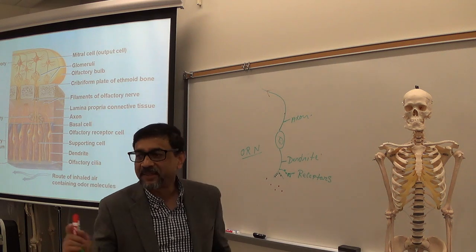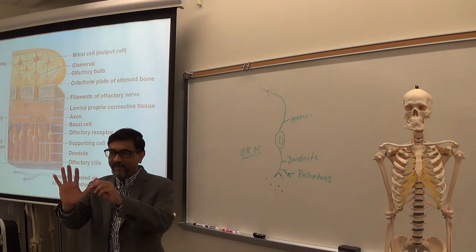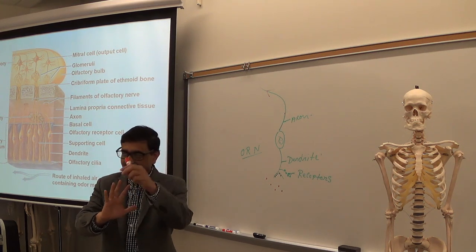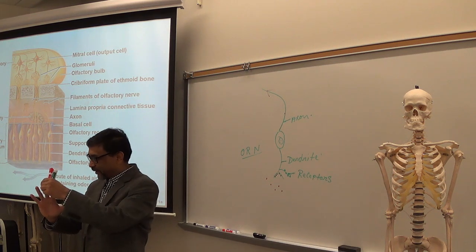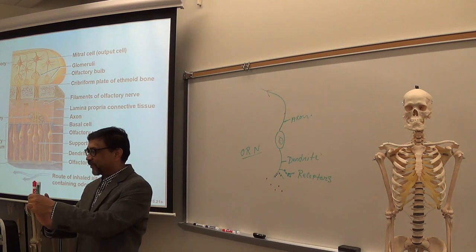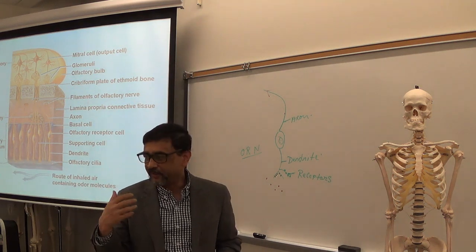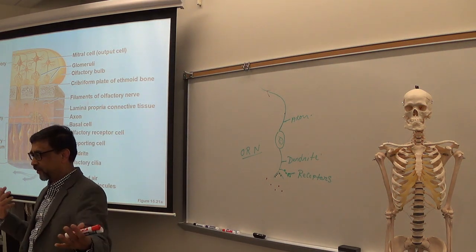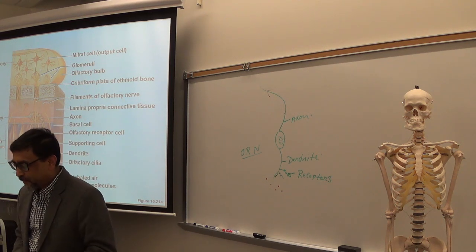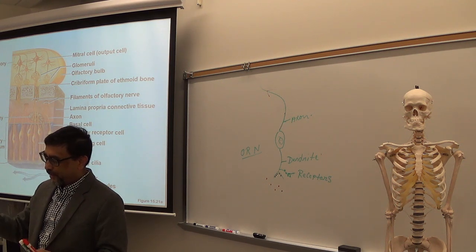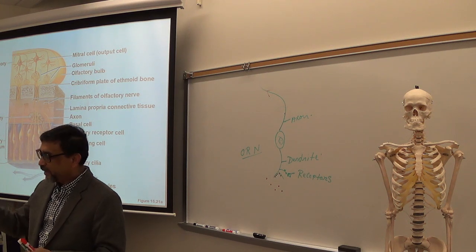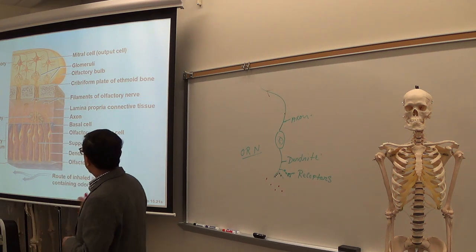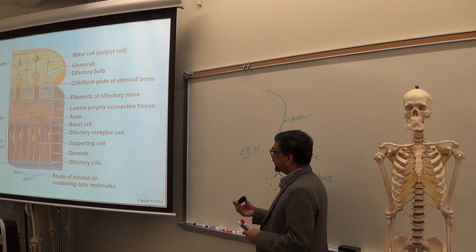The olfactory tract takes the signal to four brain structures: olfactory cortex for immediate perception of smell (identifying orange, banana, rose, etc.), hippocampus for olfactory memory, and amygdala and limbic system for olfactory emotions. That's how the olfactory system works.